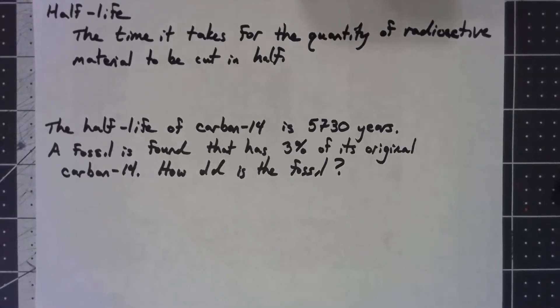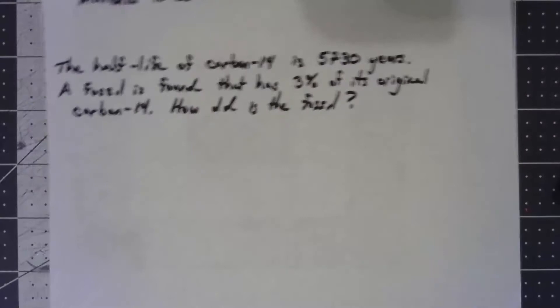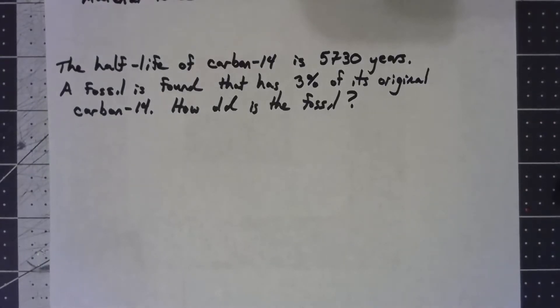So the half-life of carbon-14 is 5,730 years. You find a fossil and it's measured based on what they know of the amount of carbon-14 in the atmosphere that that thing has 3% of what it started with. So how old is that fossil?